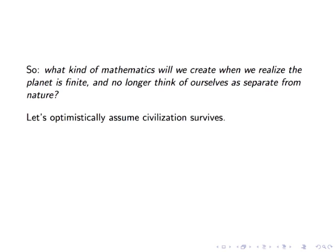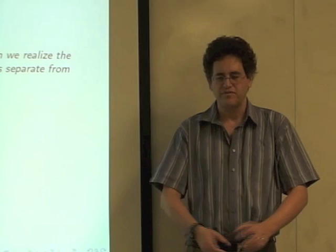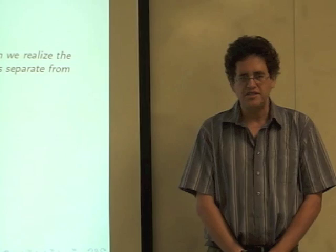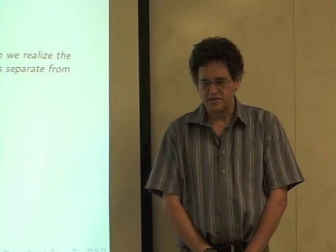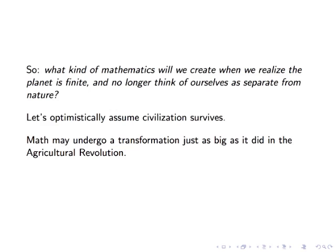So let's optimistically assume that civilization survives this process. This process is inevitable, I claim, because of the way we're running into certain limits, such as global warming, such as the maximum amount of land that can be used for agriculture, and so on. So the transition will occur, but the nature of the transition is up for grabs, and it's possible that civilization will collapse. But let's assume it survives so that mathematics as a science continues. Then I think mathematics is bound to undergo a transformation, which may be just as big as in the agricultural revolution.